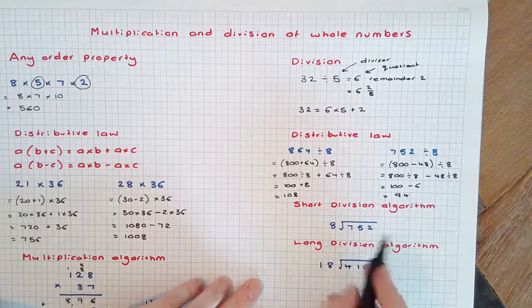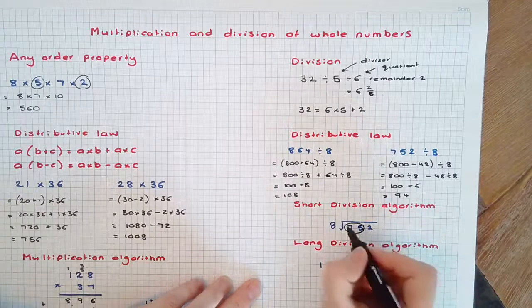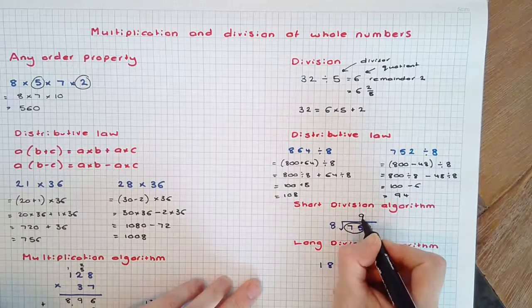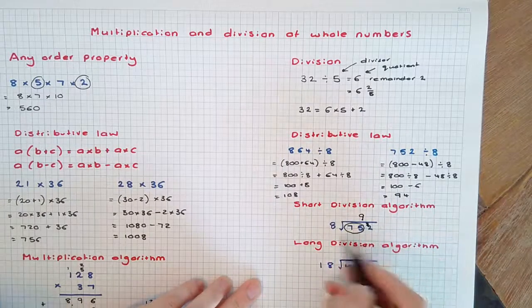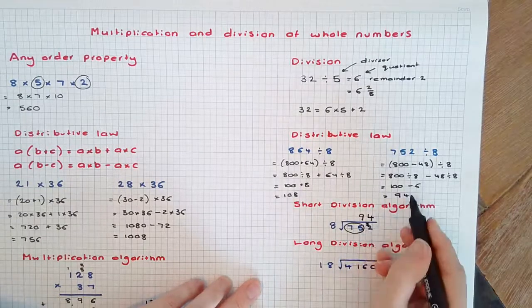8 can't go into 7, but 8 can go into 75. 8 × 9 is 72, with 3 remainder. 8 into 32 goes 4 times, and we get the same answer, 94.